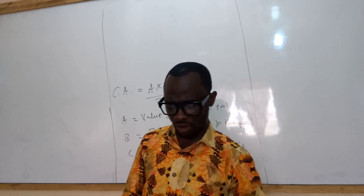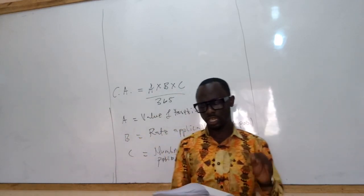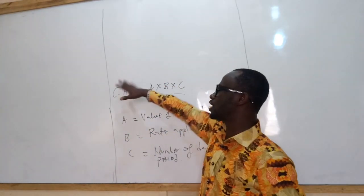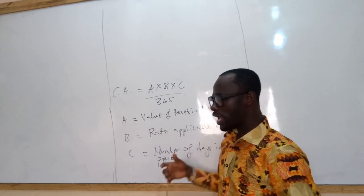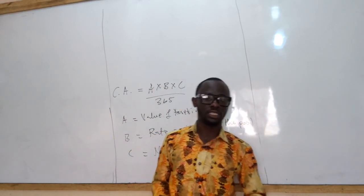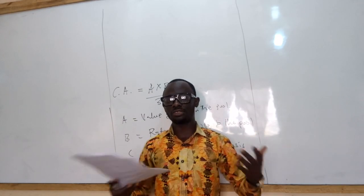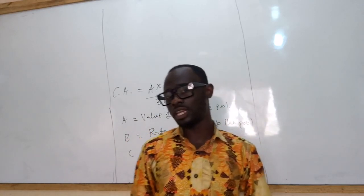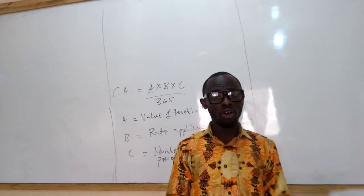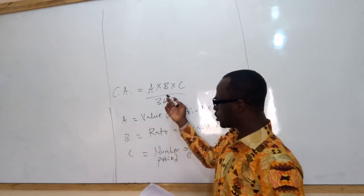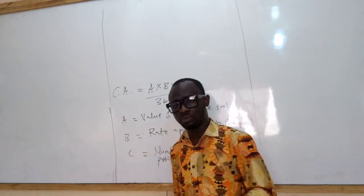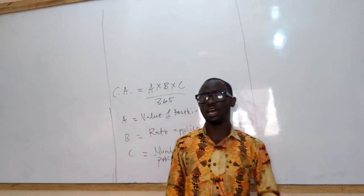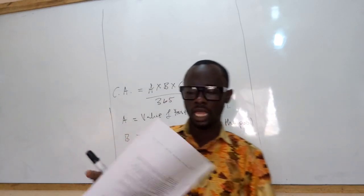Rule 9: capital allowance should still be calculated during a tax holiday. For example, if a company has been given a 10-year tax holiday, even though no tax is being paid, the Act requires that capital allowance is still computed. This is known as notional capital allowance — you calculate but do not claim. The purpose is to determine the written-down value to be carried forward so that after the tax holiday, when tax payments resume, we know the correct written-down value of the assets.